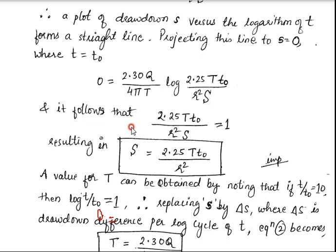From the graph it follows that 2.25T·t₀ / (r²S) = 1, and this results in: S = 2.25T·t₀ / r². This is the important equation for storativity S given by Cooper and Jacob.